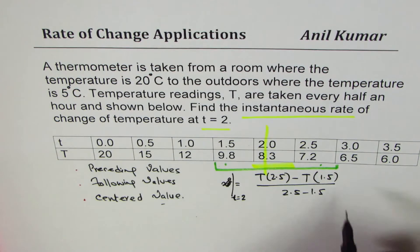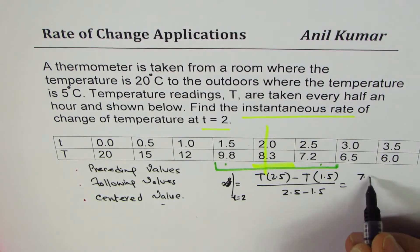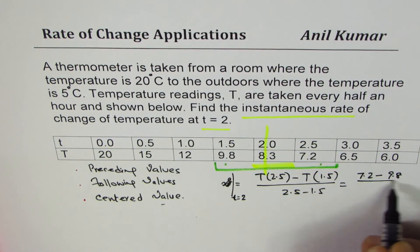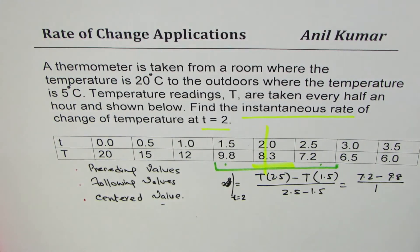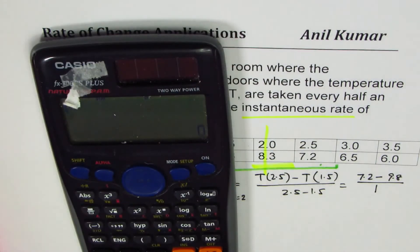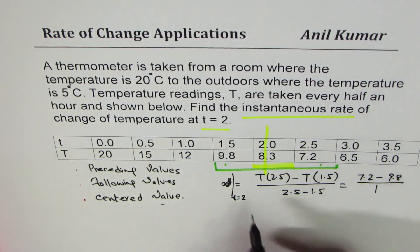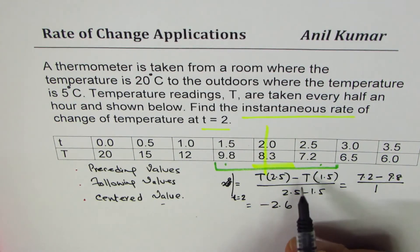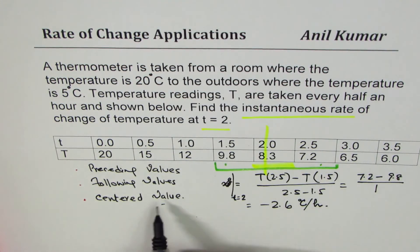Let's substitute the values. At 2.5 it is 7.2, take away at 1.5 it is 9.8, divided by 2.5 minus 1.5 is 1. Let's use the calculator: 7.2 take away 9.8 equals minus 2.6. So minus 2.6, units are change in temperature which is degree centigrade per hour.